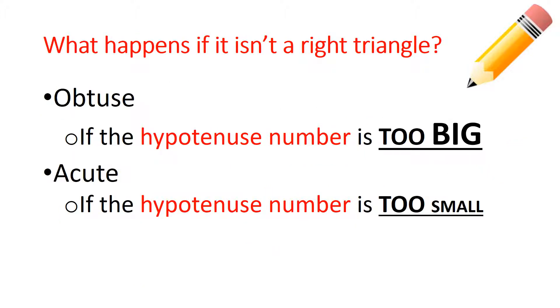What happens if it isn't a right triangle? Here's how we find out if it's obtuse or acute. Obtuse means if the hypotenuse number is too big. So the way we want to write this, and make sure you jot this down in your notes, you always want to start with C squared. If C squared is bigger than A squared plus B squared, then we would have an obtuse triangle.